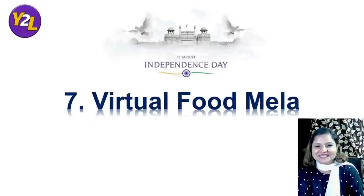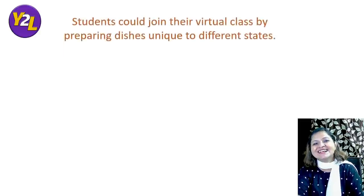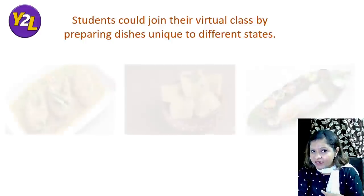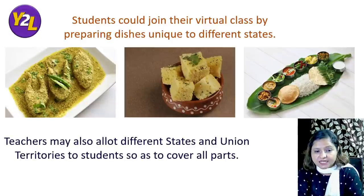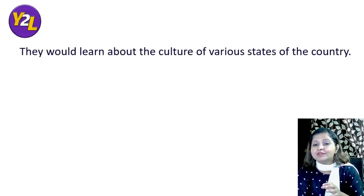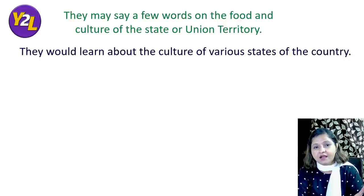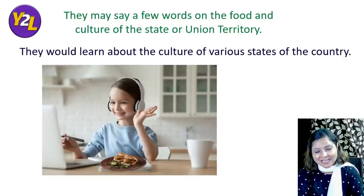The seventh and last activity is Virtual Food Mela. Students join their virtual class having prepared dishes unique to different states of the country. Teachers may allot different states and union territories to students to ensure wider coverage. Besides enjoying the cuisines, students learn about the culture of various states, and share a few words about the food and culture of the state or union territory they are representing.